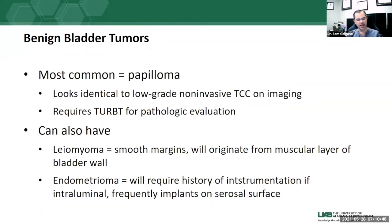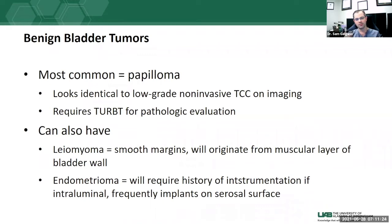Other less common benign bladder tumors include leiomyomas. Since the bladder is made of smooth muscle, you can get leiomyomas as you can in the uterus. These originate from the muscular layer of the wall and tend to have smooth margins, in contrast to more aggressive tumors with polypoid or frond-like margins. You can also have endometriomas or endometriosis involving the urinary bladder. Intraluminal involvement typically requires prior instrumentation, while extraluminal deposits frequently implant on the serosal surface of the urinary bladder.